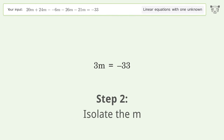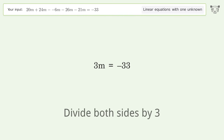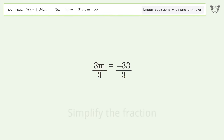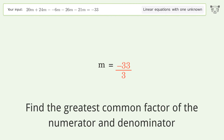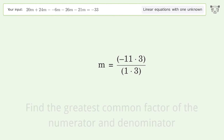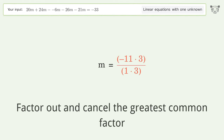Isolate the m by dividing both sides by three. Simplify the fraction by finding the greatest common factor of the numerator and denominator, then factor out and cancel the greatest common factor.